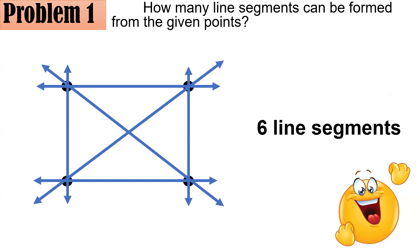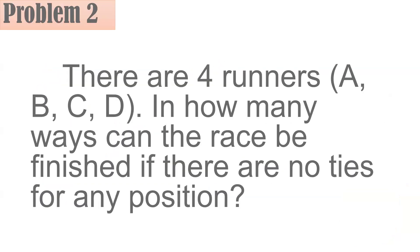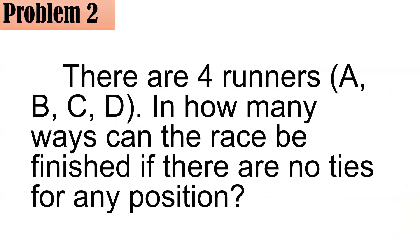So be very careful if you are confronted with problems like this. Problem number two: there are four runners — let's call them A, B, C, and D. In how many ways can the race be finished if there are no ties for any position?